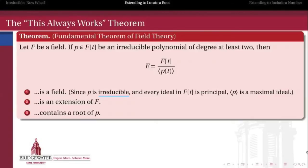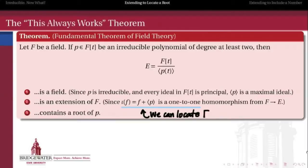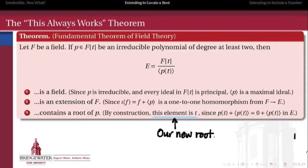So the first observation is that this is always a field, and it extends f. Why does it extend f? Because this monomorphism can locate f inside of e. All we have to do is take every element of f and send it to the coset f plus the principal ideal generated by p. So we can locate a copy of f inside of e, and therefore e is an extension of f. Finally, the most important thing — the reason why we did this whole construction — is that this new field e contains a root of our polynomial p, where the original field f did not. By construction, that element is exactly the thing that we call t, because we exactly set p of t and all of its multiples equal to zero inside of this quotient.